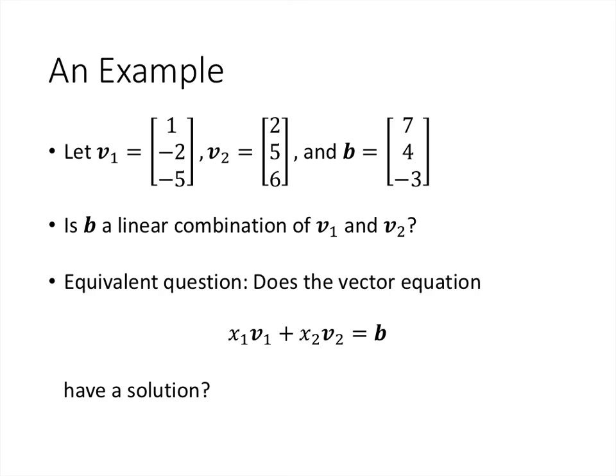Let's do an example. Say we have two vectors in R3: v1 = [1, -2, -5], v2 = [2, 5, 6], and b = [7, 4, -3]. The question is: is b a linear combination of v1 and v2? Are there two scalars x1 and x2 such that x1 times v1 plus x2 times v2 equals b? The variables we're solving for are x1 and x2; v1, v2, and b are given.